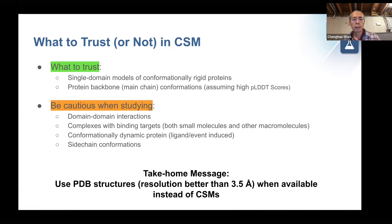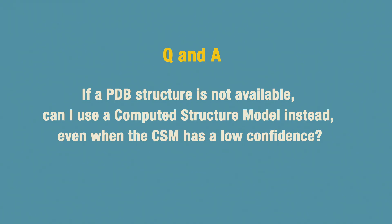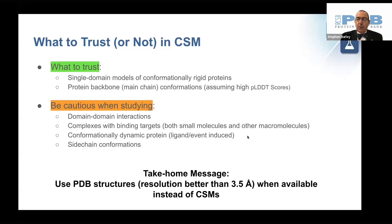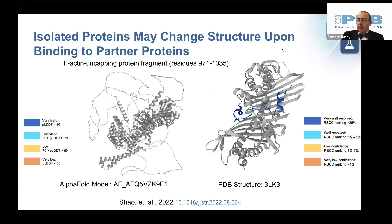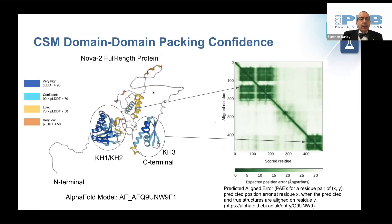We do not recommend using computed structure models that are largely yellow or orange in terms of their pLDDT prediction confidence. What we see from many eukaryotic proteins is that they look like beads on a string. The globular portions of the computed structure model that are colored blue and cyan are trustworthy. But the other segments of the polypeptide chain — those color-coded yellow and orange, indicating low prediction confidence — should not be trusted.